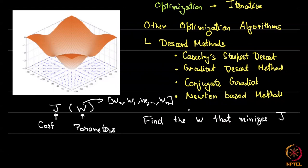You might ask — optimization means I could maximize also. Of course, all the problems we are doing are trying to minimize the gap between reality and our model, so typically we use minimization. As it turns out, if you have a maximization problem, you just minimize minus J — any maximization problem by taking a negative can be turned into a minimization problem.